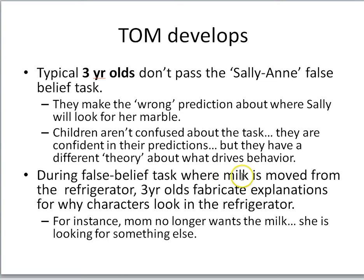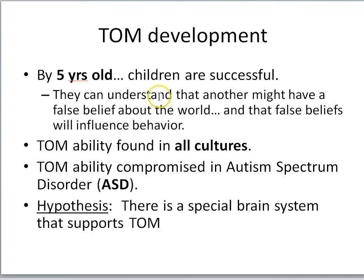Three-year-olds have a different sort of theory about what's driving behavior. In the milk example, they will often fabricate very passionately held explanations — they might say mom no longer wants the milk and is looking for something else. By age five, children are successful: they can understand that another person might have a false belief about the world and that these false beliefs influence behavior. This developmental progression has been found all over the world in all cultures so far studied — children naturally move from failing the false belief task at three to passing it at five.